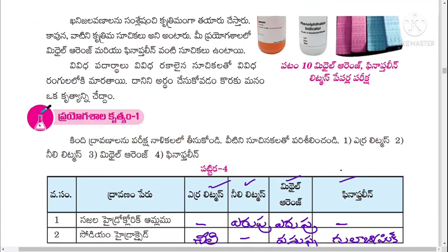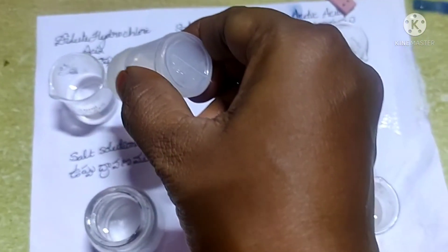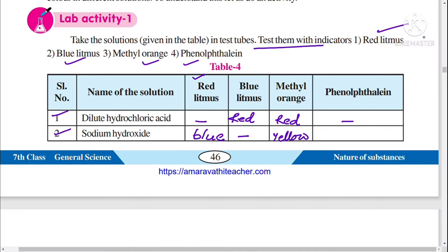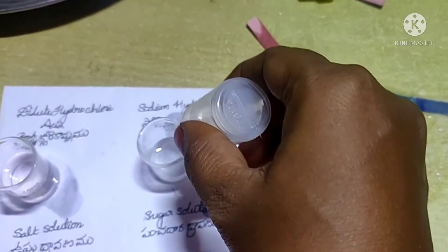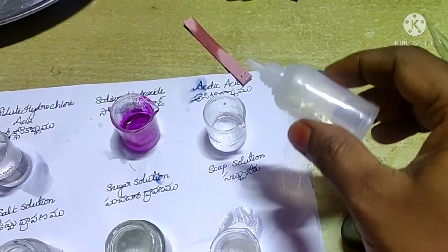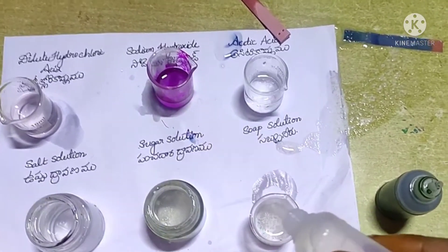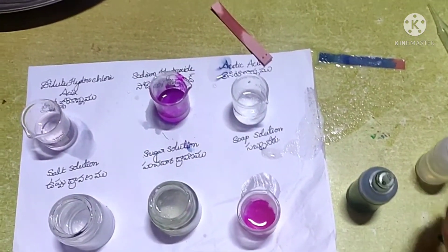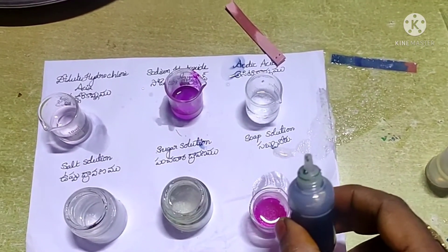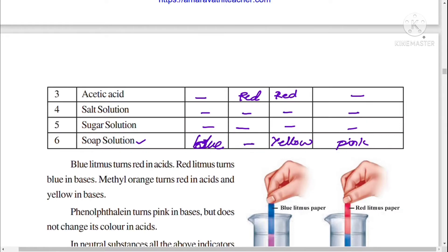The next indicator is phenolphthalein. Add two or three drops of phenolphthalein to dilute hydrochloric acid — no color change. Add phenolphthalein to sodium hydroxide solution — it turns pink. Add phenolphthalein to acetic acid — no change. Salt solution — no change. Sugar solution — no change. With soap solution — it turns pink. So phenolphthalein turns pink with base solutions but does not change color with neutral or acidic solutions.